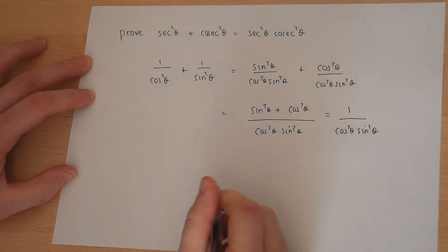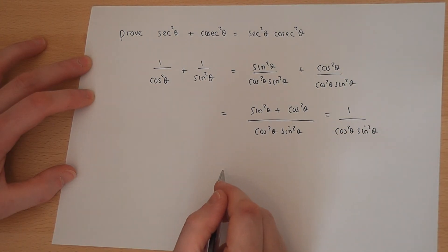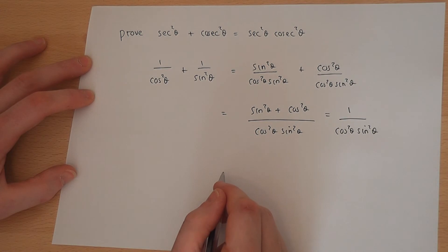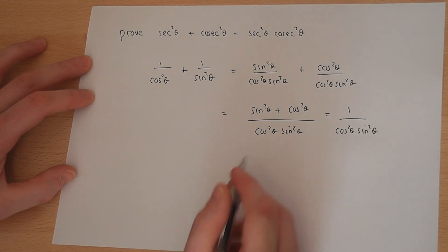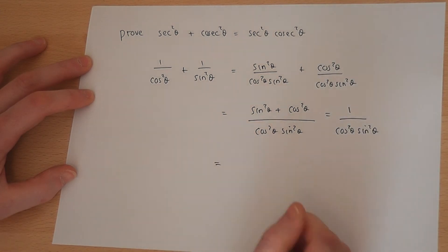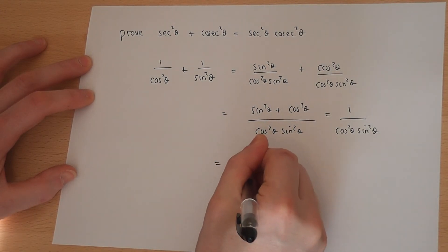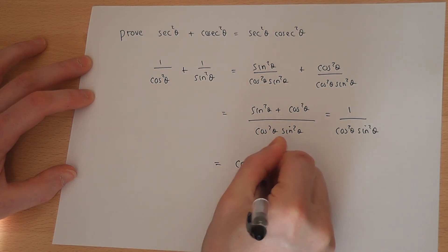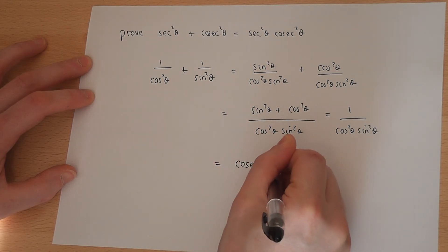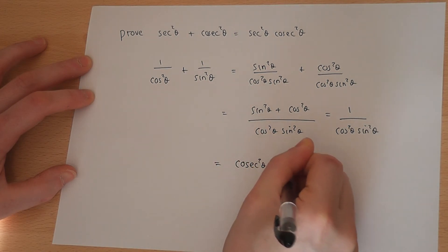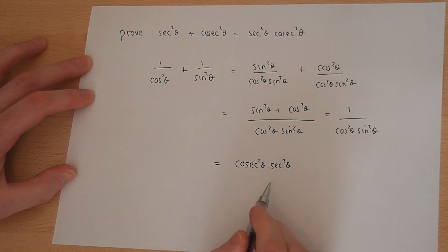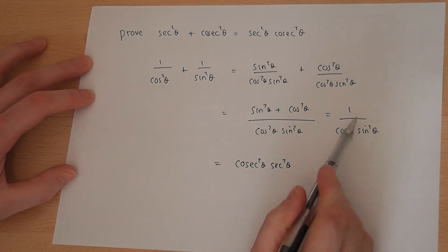But 1 over cos is sec, and 1 over sine is cosec, so therefore this equals cosec squared theta times sec squared theta by definition.